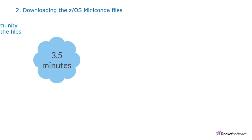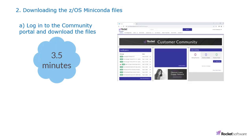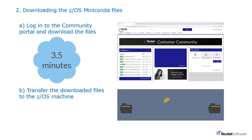In the second video, you'll see how to login to Rocket's community portal and download the ZOS Miniconda installation files, and then transfer the files to the ZOS machine.